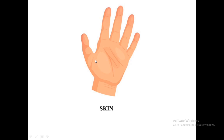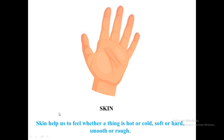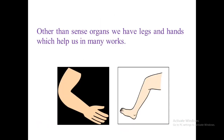This is skin. Skin is also our sense organ. Skin helps us to feel whether a thing is hot or cold, soft or hard, smooth or rough. Next, other than sense organs, we have legs and hands which help us in many works.